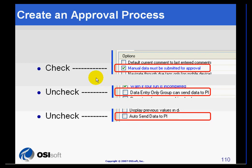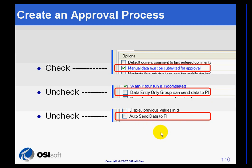Using the users and user groups, we can create an approval process by selecting under the tool options that the data must be submitted for approval, and unchecking the ability of the data entry group to send data to the PI Server, as well as unchecking the auto-send feature of data to the PI Server.